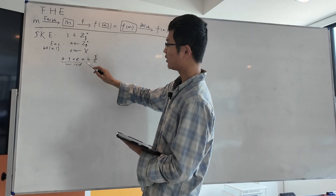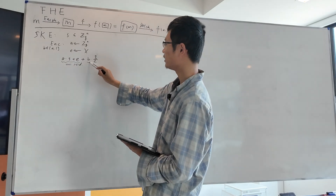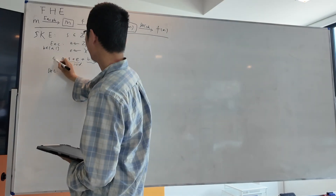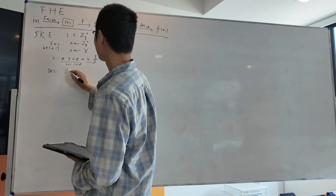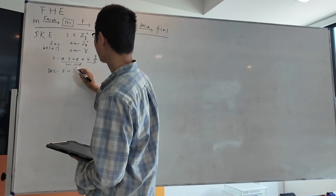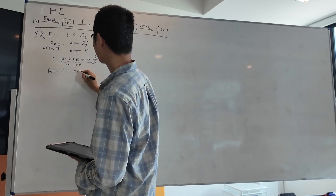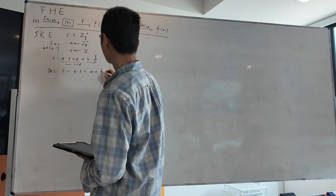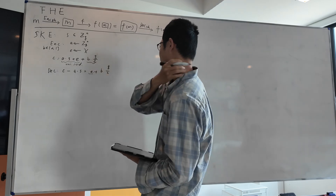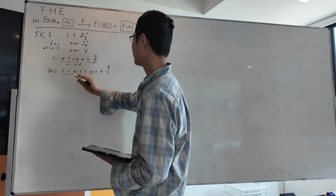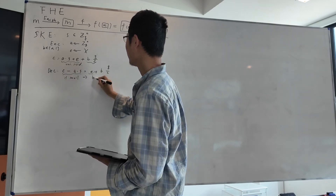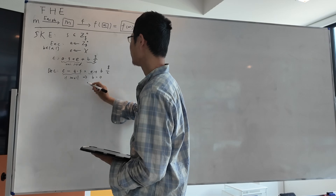So you use a one-time pad to hide your message b. To decrypt it, you compute ciphertext minus a times s, and get e plus b times q over 2. Since this is a small error, you simply test if this is small — if it is small, then the secret bit is zero; otherwise the secret bit is one.